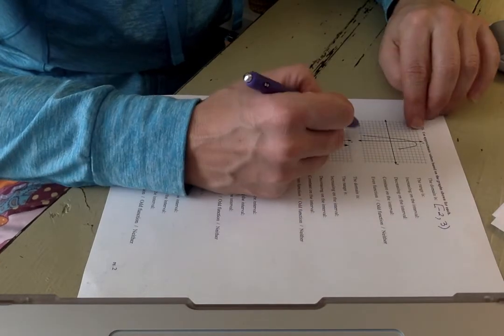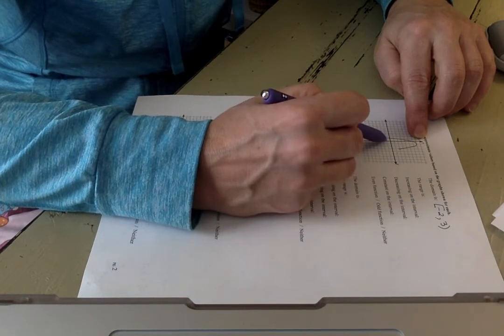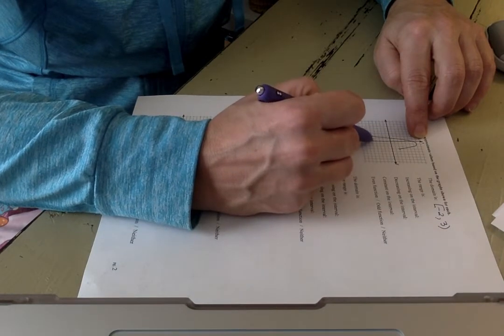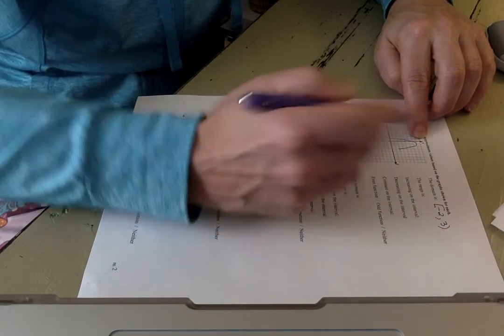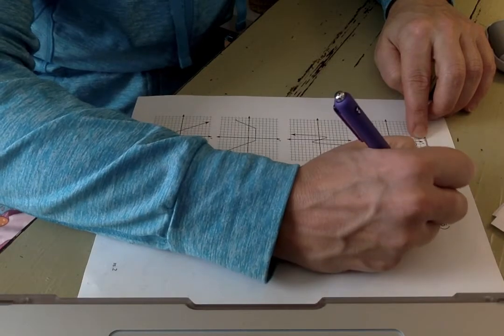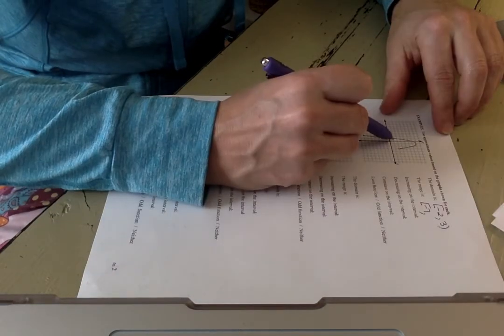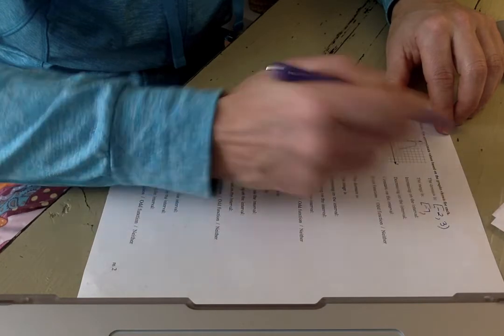Your range is your lowest y value to your highest y value. In this instance, our lowest y value is negative 7. So that's going to be negative 7 inclusive to the highest y value, which is 7.